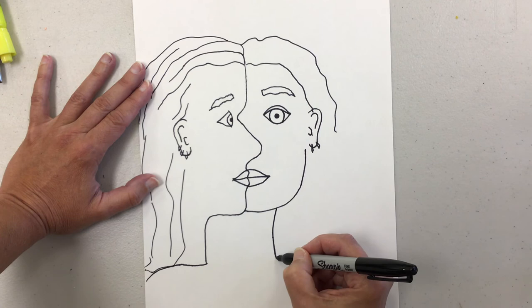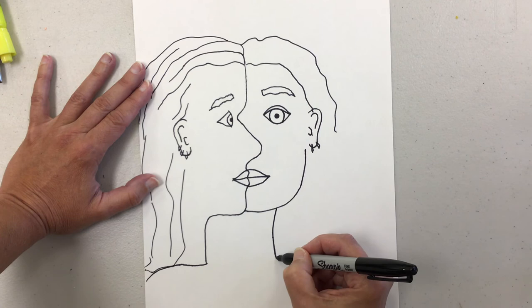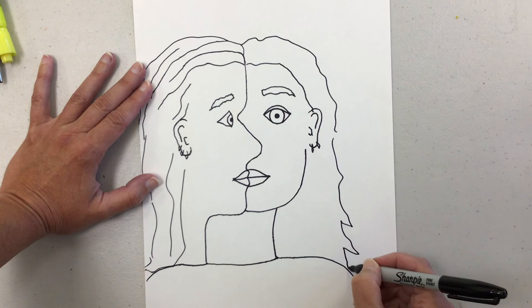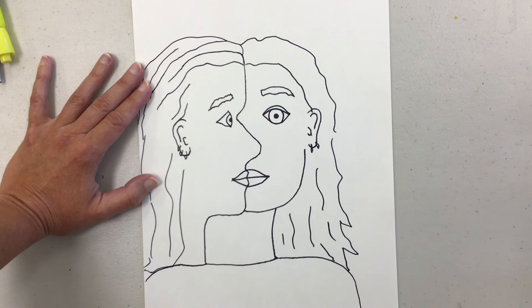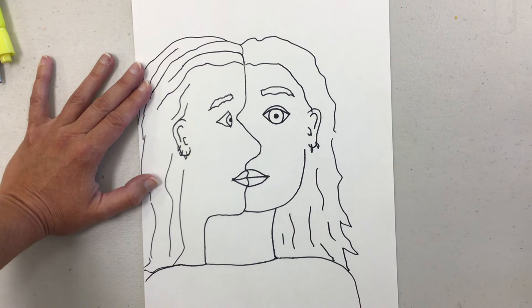and continue my face to the chin. Do the neck on this side. There's the top of my shirt. Put in my shoulder. Remember, I'm not going to color this in, just doing an outline of my hair. I can put in some of these lines. There we go.